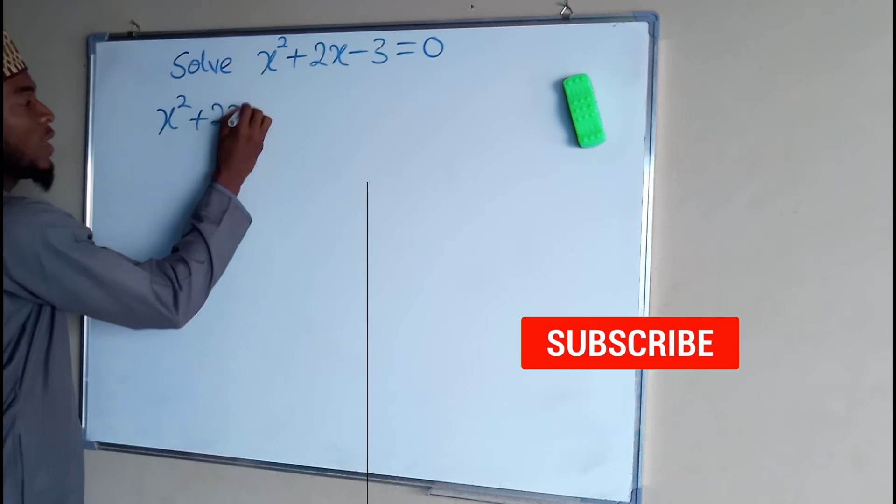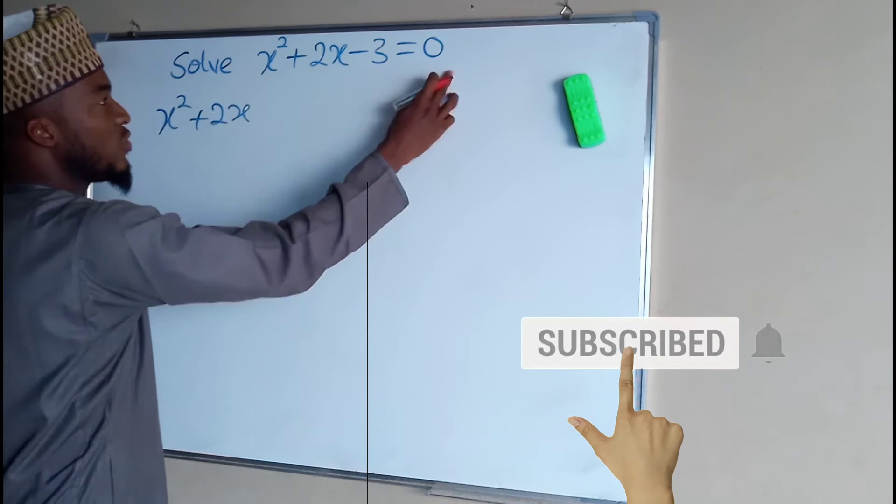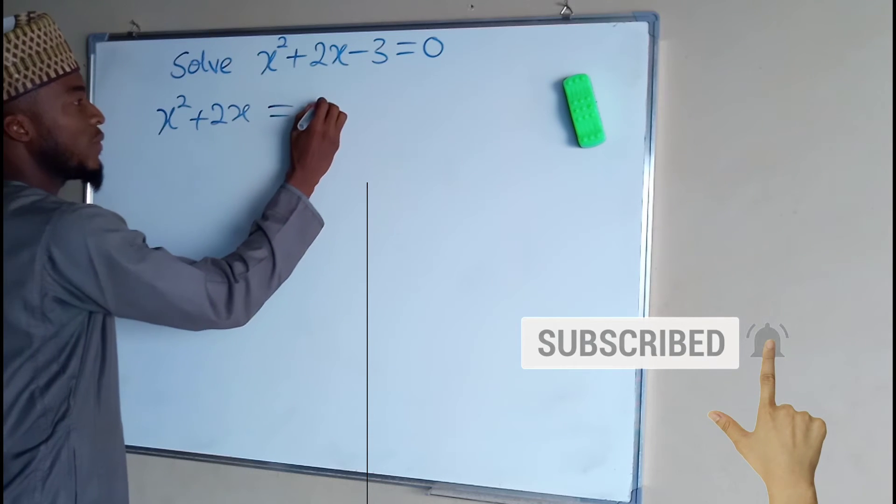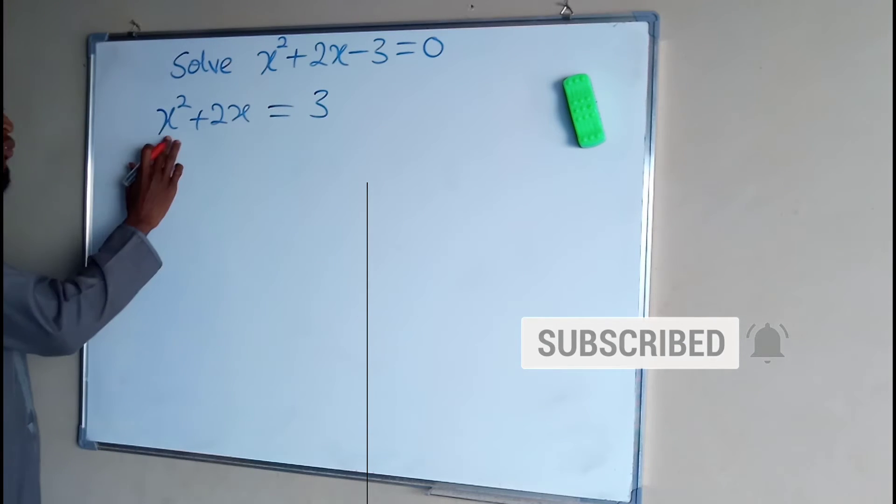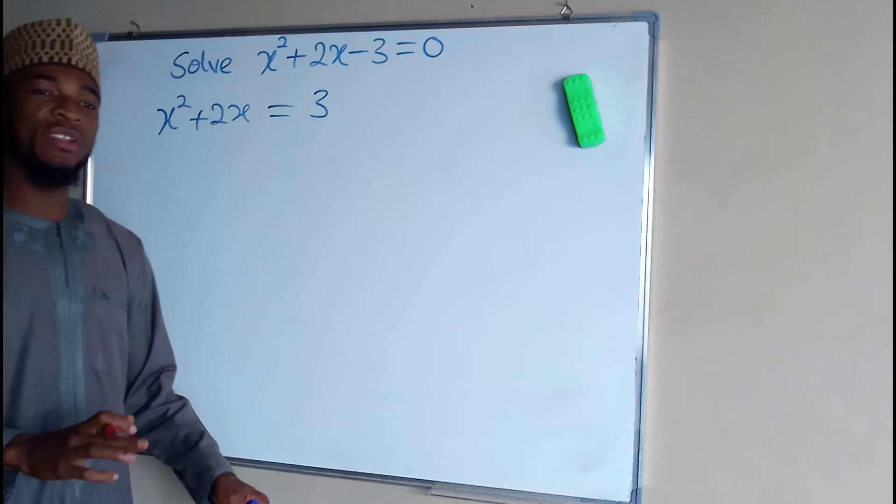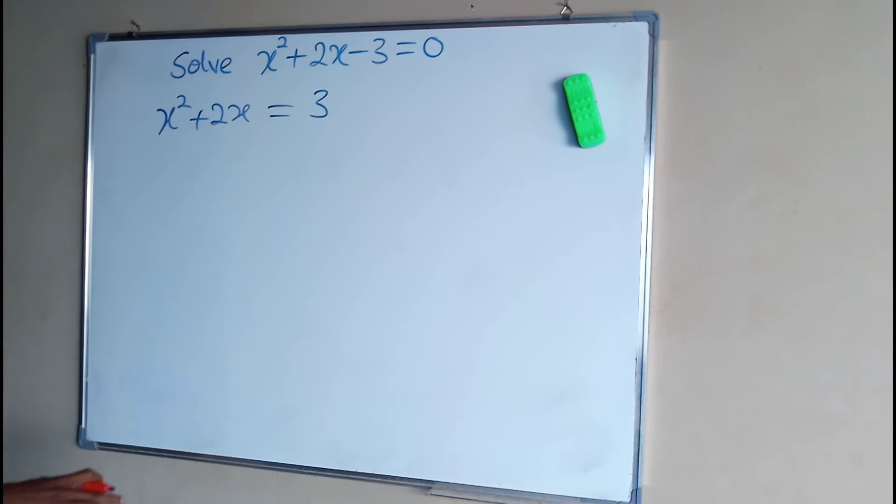x squared plus 2x. If you take negative 3 to the right-hand side, it becomes positive 3. So each one of these three terms, I am going to use geometry to represent each one of it.